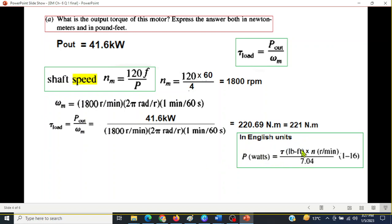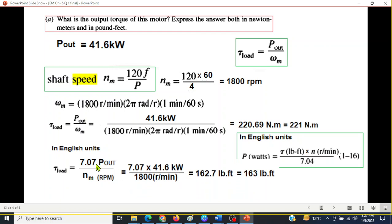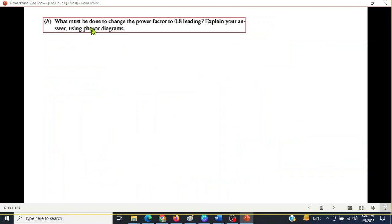The formula for power in terms of pound feet is power is equal to the torque multiplied by speed in revolutions per minute divided by 7.04. From here, torque can be calculated to be 7.07 P_out divided by the speed in revolutions per minute. Keep in mind we had calculated in radians per second. So 7.07 times P_out 41.6 and speed is 1800 revolutions per minute. The answer will be 162.7 pound feet or approximately 163 pound feet. This is part a.